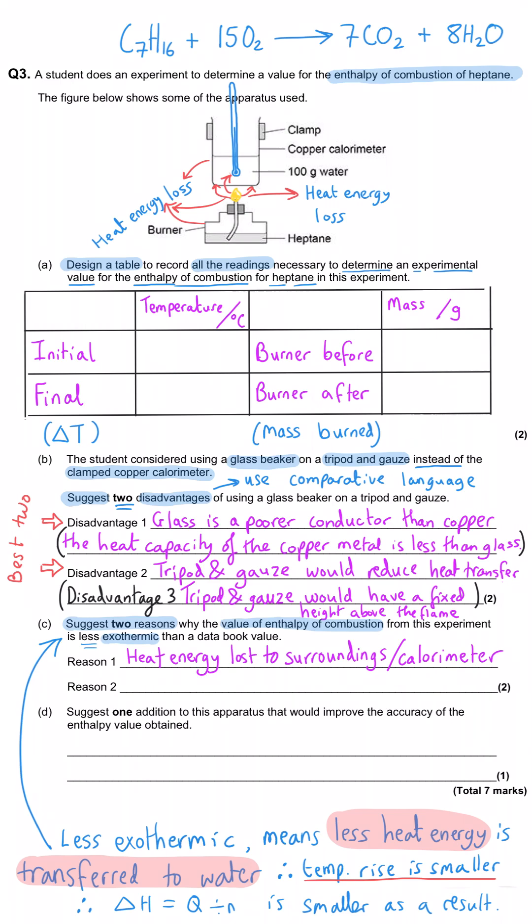But it is useful to note that occasionally they do say other than heat loss to the surroundings why might this value not match the data book value. And that's when we can wheel out the well the equipment might have got warmed up as well. So we're not talking about the surroundings we're talking about the equipment. So in this question we can probably only use that for one of our reasons though.